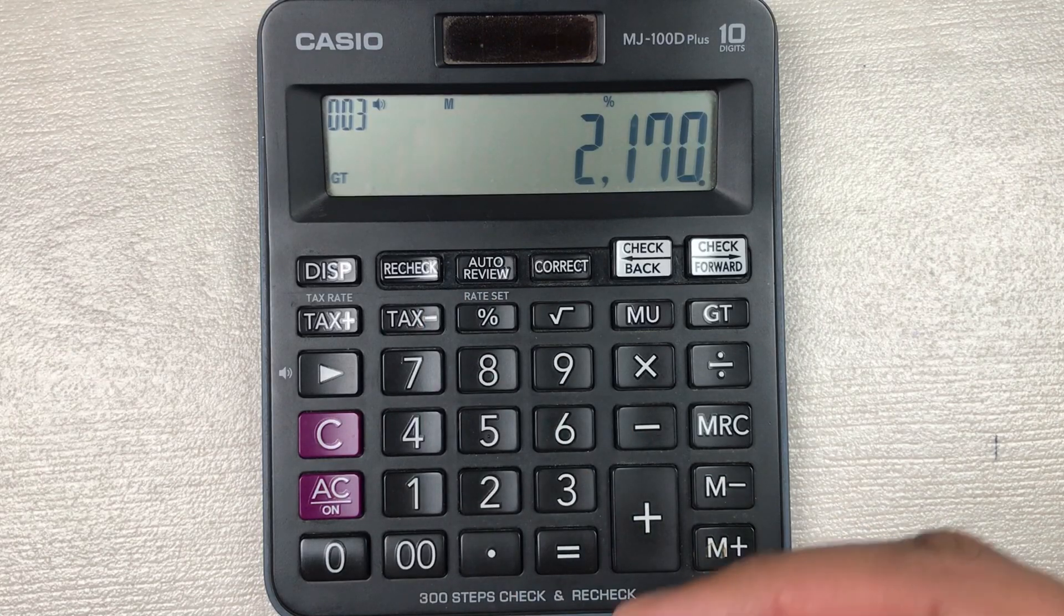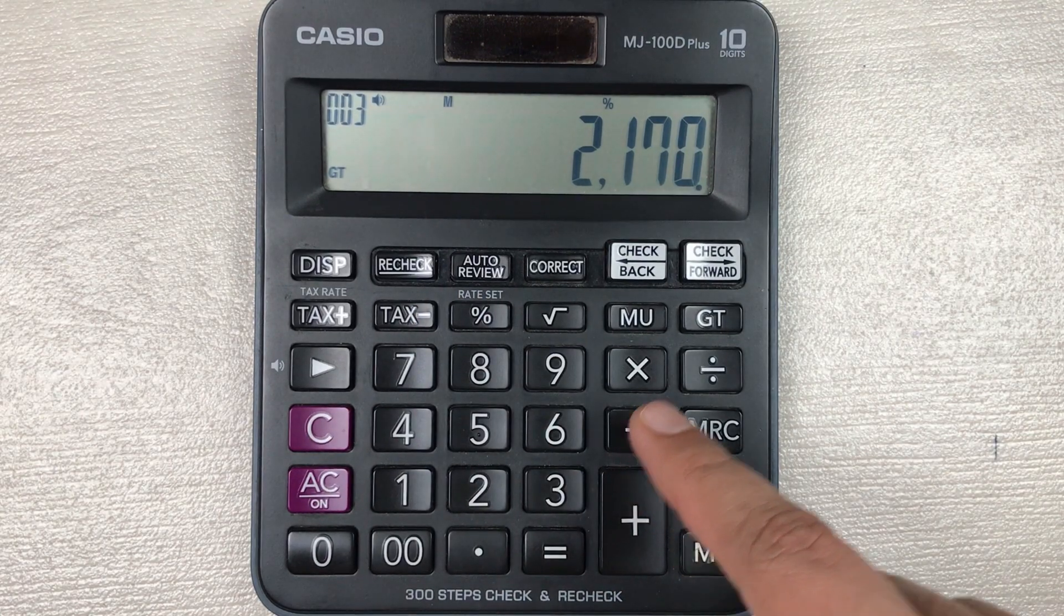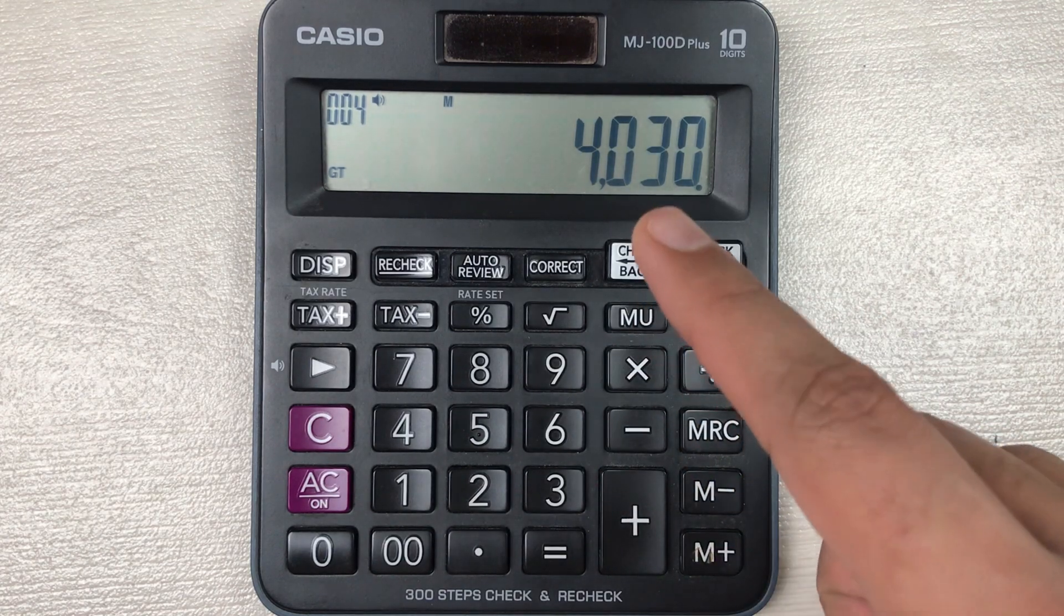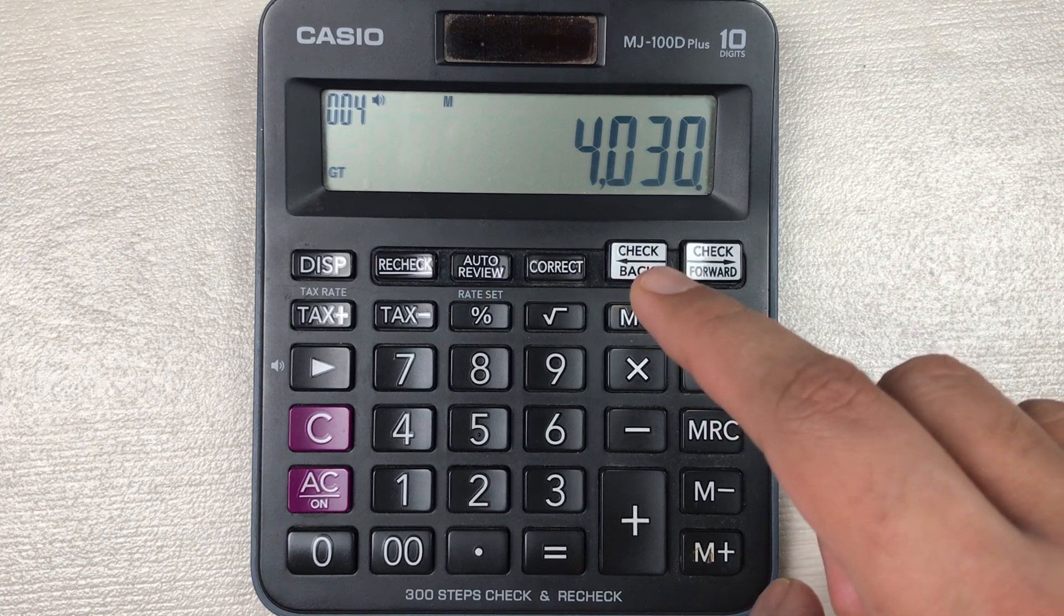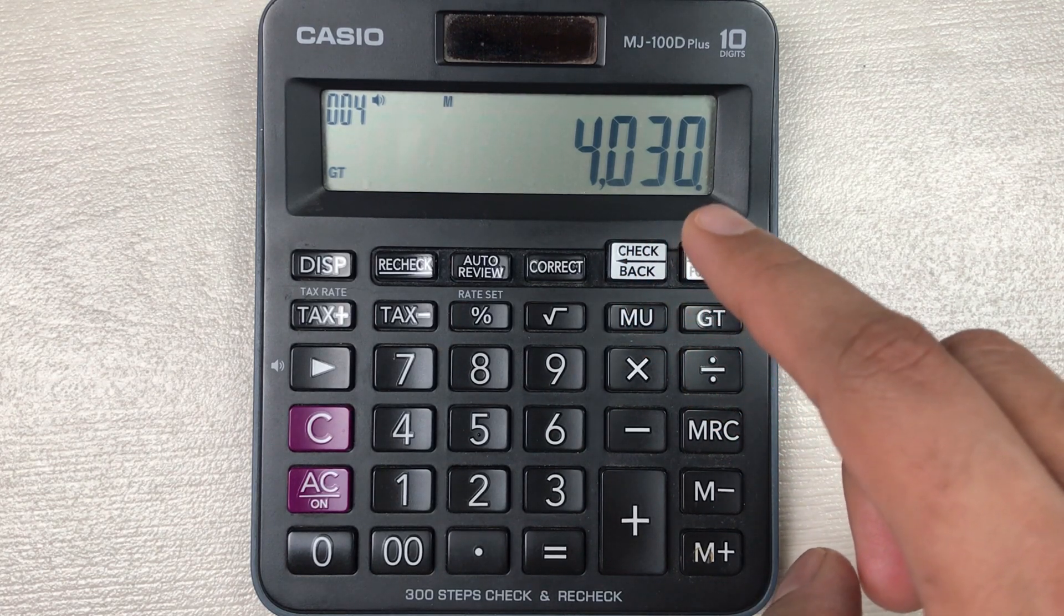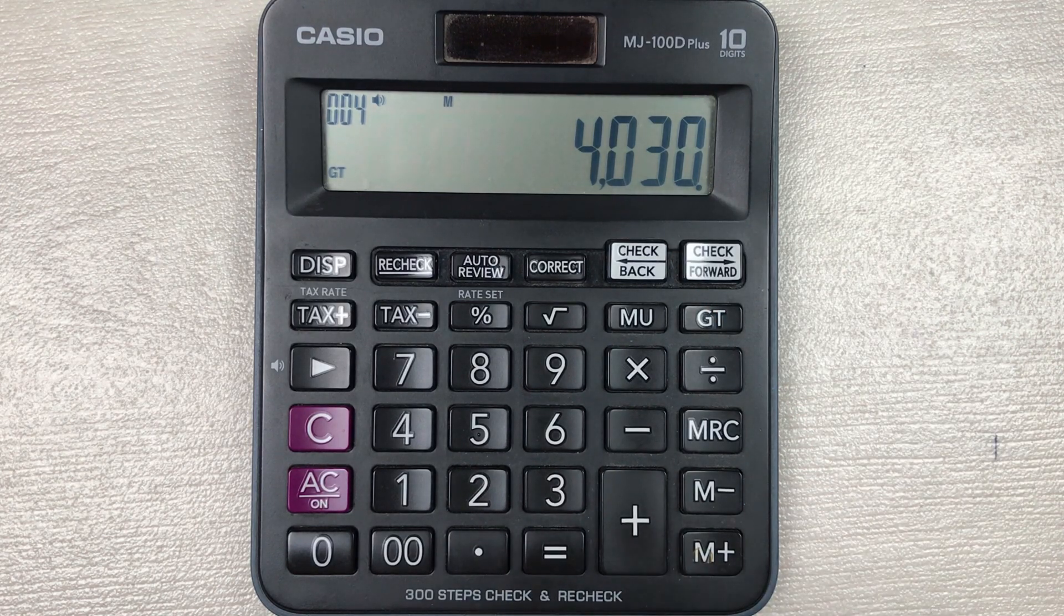You have to press this percentage button. So I press this percentage button and in the last step you have to press this minus button. When you press this minus button you have your final price. So 4030 is the final price after 35 percent off. Let's move to one more example.